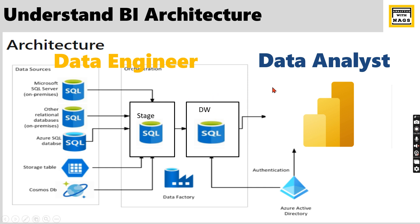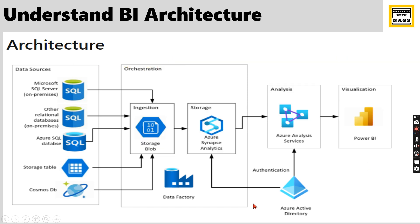As a data analyst, we are focused on creating the models. When a new dimension or fact is added, you need to include it in your modeling — that's why you need a clear understanding of modeling. Then data flows into the reports. If something goes wrong, you need SQL knowledge to troubleshoot it, because you can't always depend on data engineers. You'll need to go one step back and look at what went wrong. So as a data analyst, you need Excel, SQL, modeling skills, and Power BI — and you are part of the BI architecture even if you're not involved in the earlier data engineering parts.